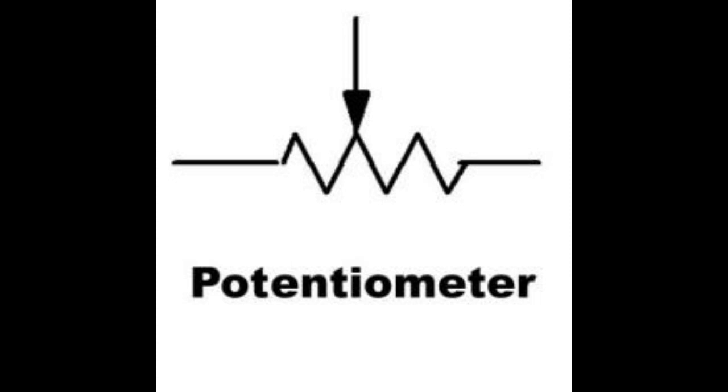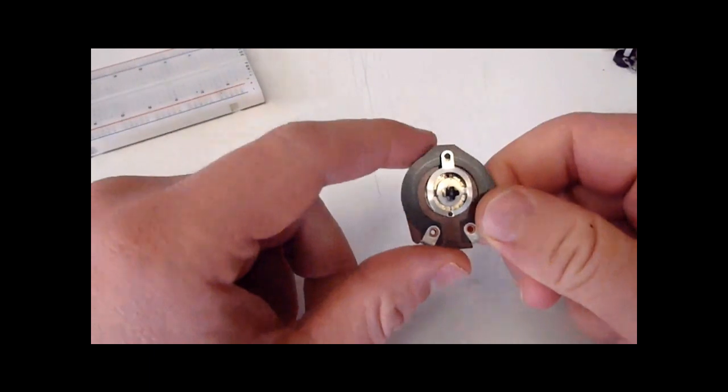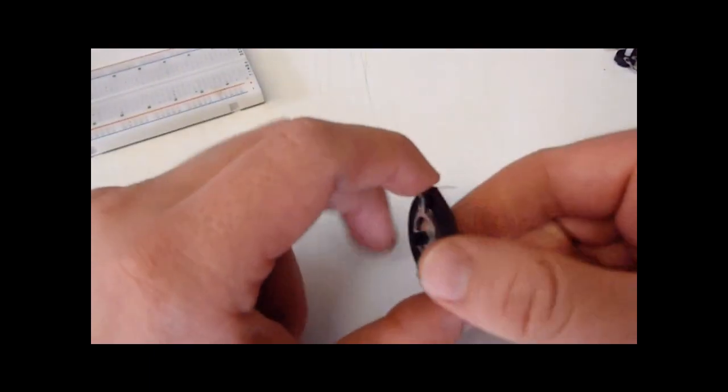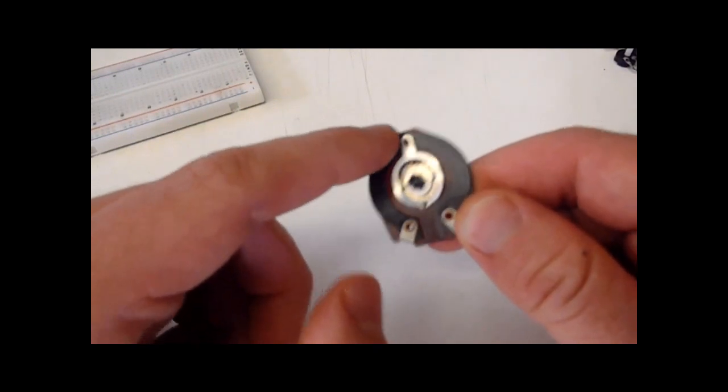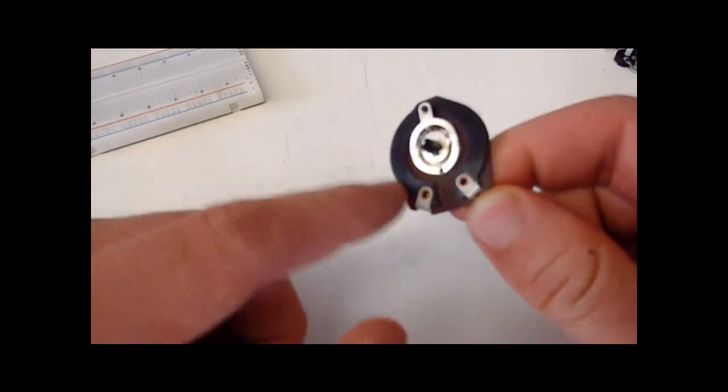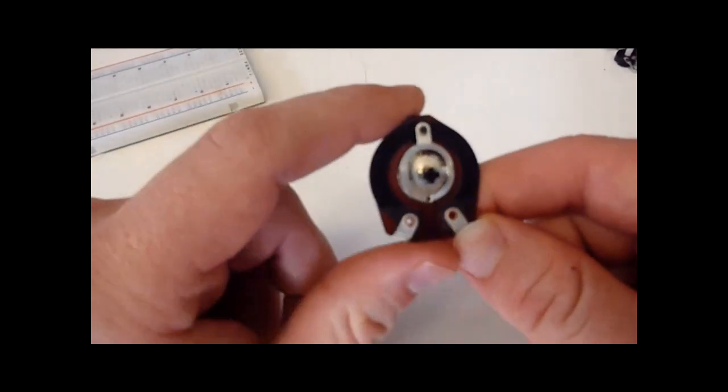This is the international standard for the potentiometer schematic symbol. Now what I have here is a disassembled potentiometer so we can actually see how it works. As you can see right here there's a carbon film that goes along the entirety of it, and that is the actual resistor itself.